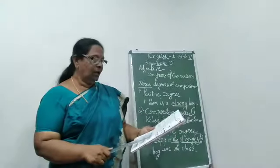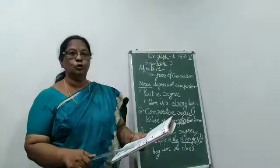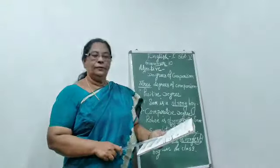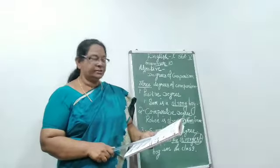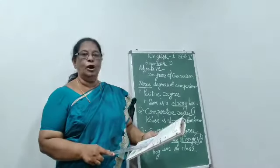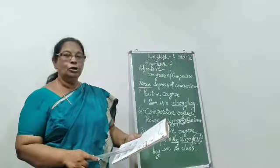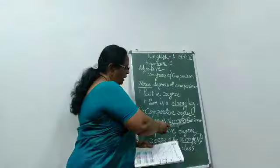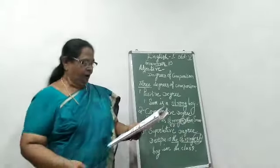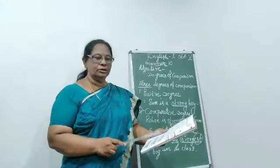Now just have a look at this. The following are the ways in which we form comparative and superlative forms. Look in your textbook so it is easy for you to underline. First rule: most adjectives add 'er' to form the comparative and 'est' to form the superlative. Underline that — 'er' for comparative and 'est' for superlative. For example: strong, stronger, strongest.